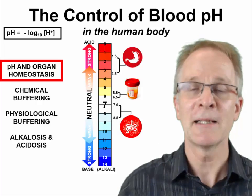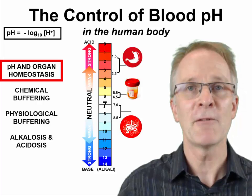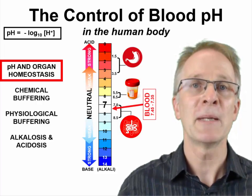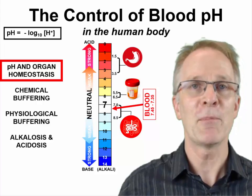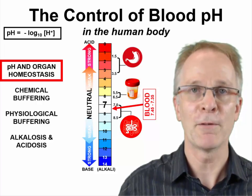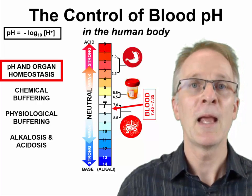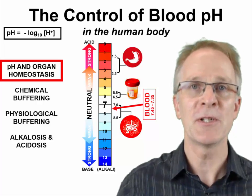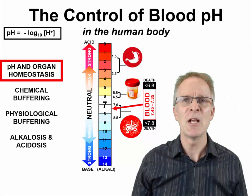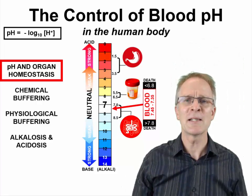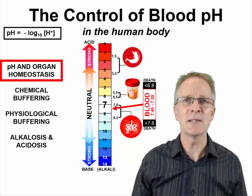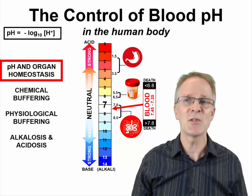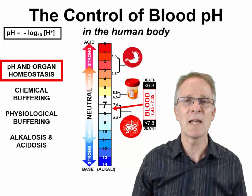Blood has a very narrow pH range within which it can operate: pH 7.35 to 7.45. Anything outside of that range can lead to some serious health consequences.